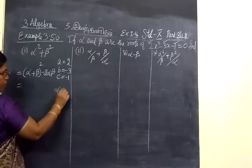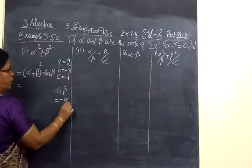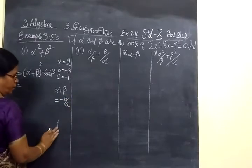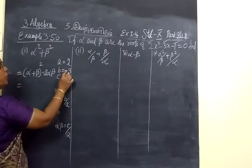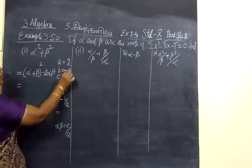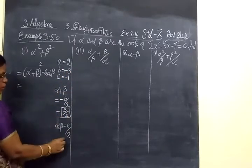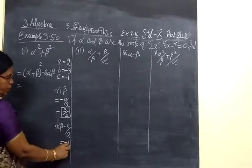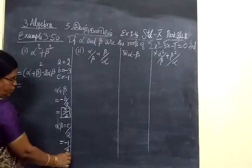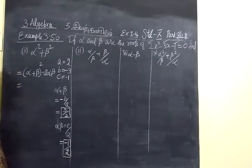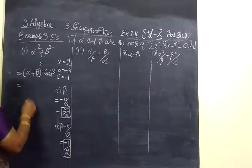First, we have to find the sum of the roots and the product of the roots. Alpha plus beta equals minus B by A, which is 3 by 2. Alpha beta equals C by A, which is minus 1 by 2.